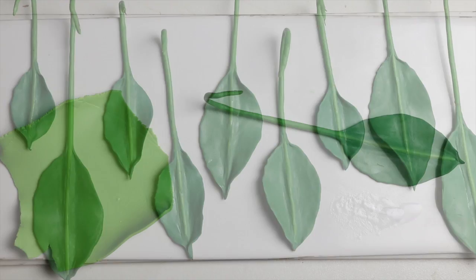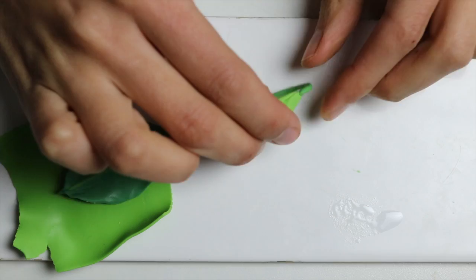Now I'm adding the body of the pitcher plant. I'm starting with a lump of clay that I smooth around the twig.